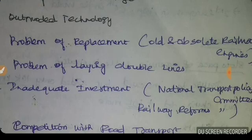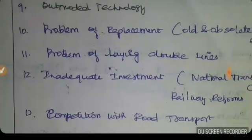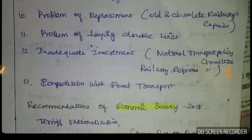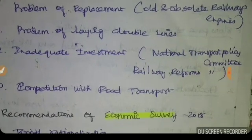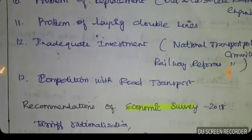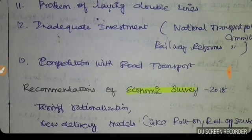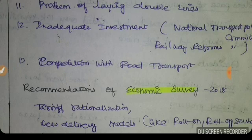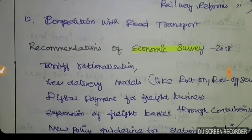Eleventh, problem of laying double lines — many sections remain single line and conversion to double lines has not been completed. Twelfth, inadequate investment — noted by both the National Transport Policy Committee and the Railway Reforms Committee. Thirteenth, competition from road transport — roads are more competitive in the market, and to compete railways need to rationalize fares.